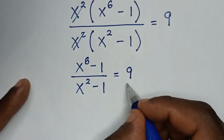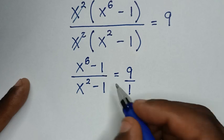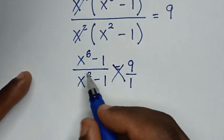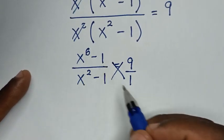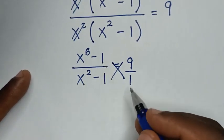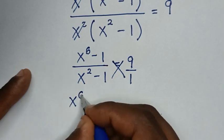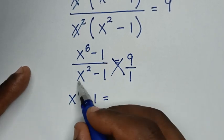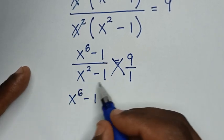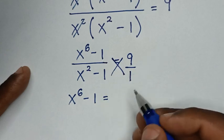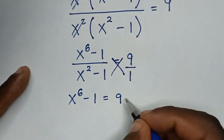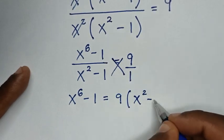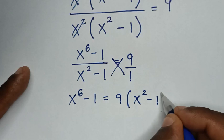Now, to simplify, this will cancel with this. So it will be x power of 6 minus 1 over x power of 2 minus 1 is equal to 9. This 9 is same as 9 over 1. So, we will cross multiply. It will be x power of 6 minus 1 is equal to x power of 2 minus 1 times 9, which is 9 bracket x power of 2 minus 1 bracket.